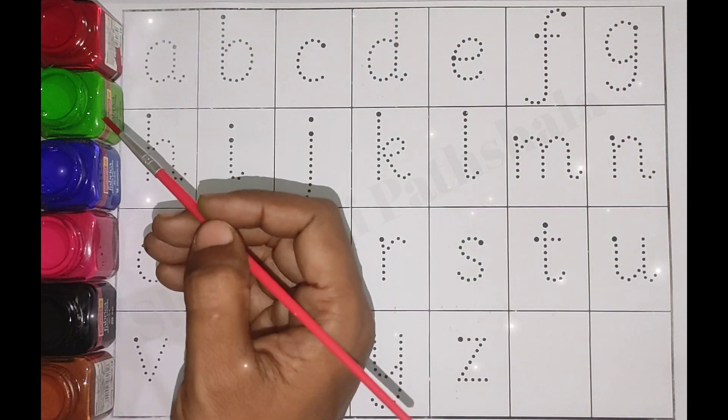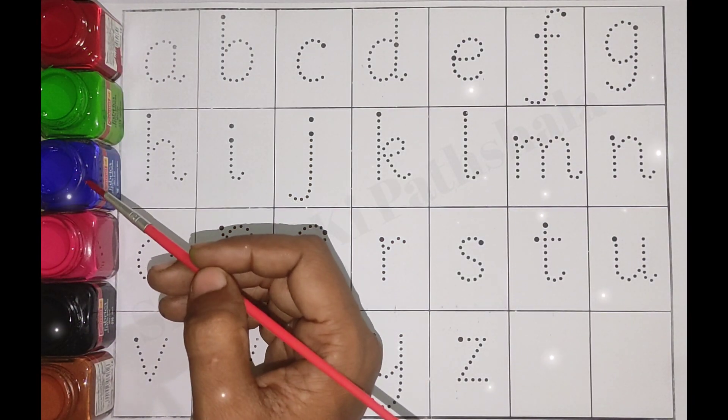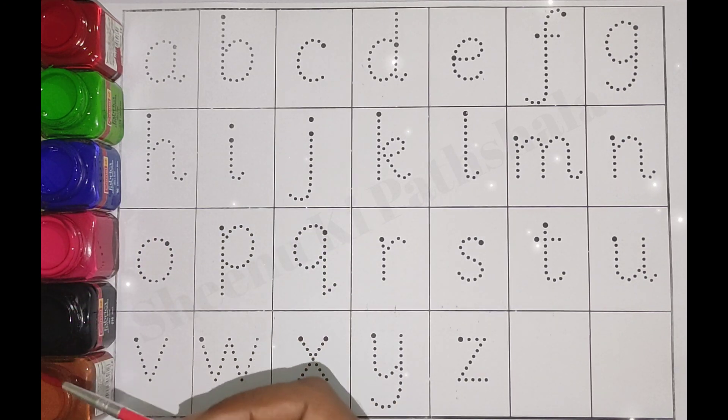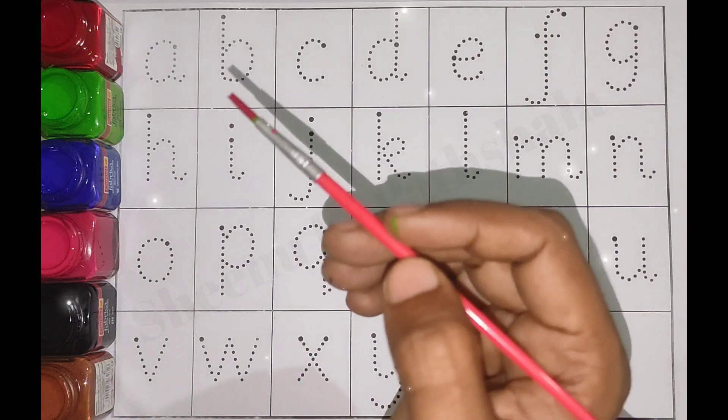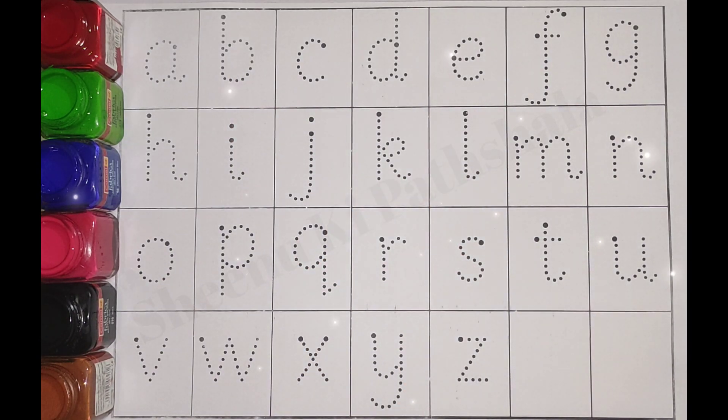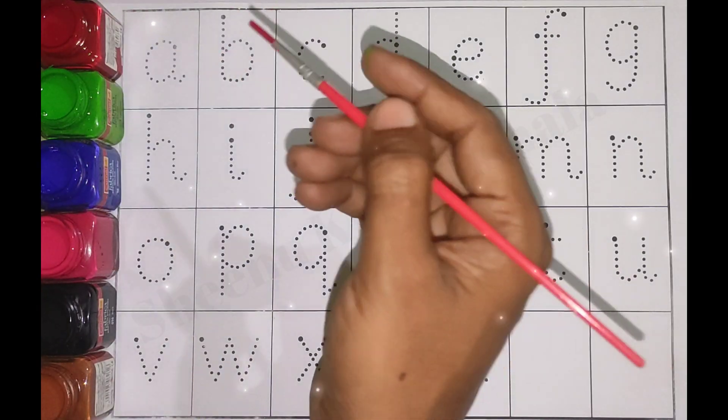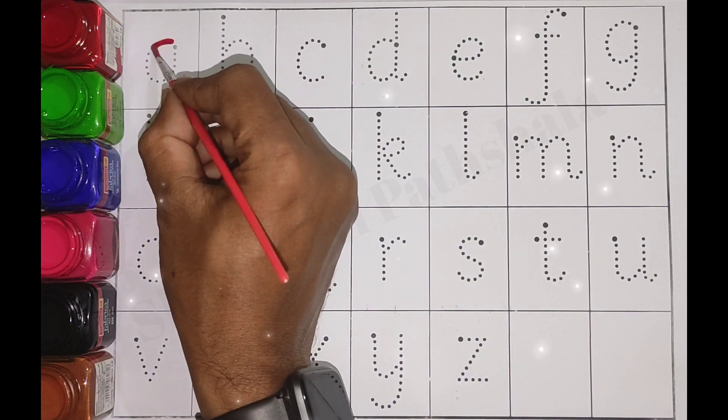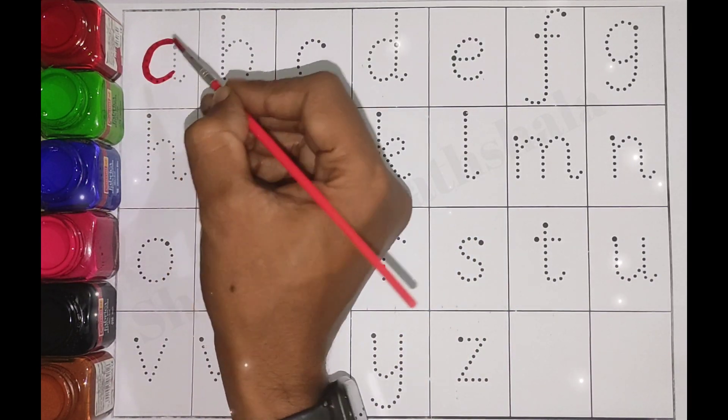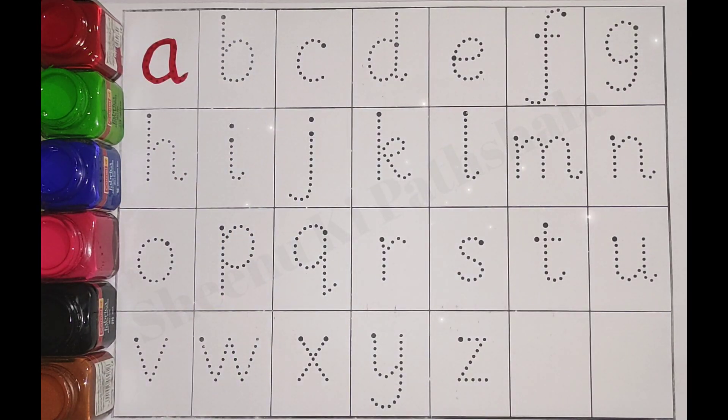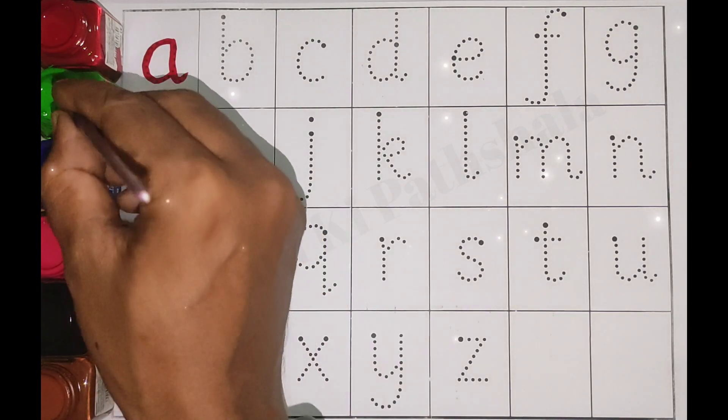Red color, green color, blue color, pink color, black color, brown color. Today we are going to learn a, b, c, d in small letters. Let's start. Red color a, a for apple. Green color b.